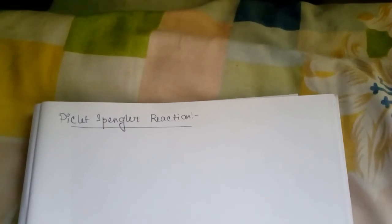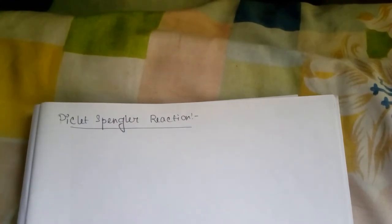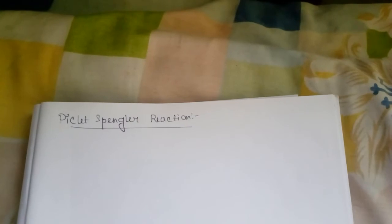This video is about isoquinoline preparation. The first method was shown in my previous video and the second method is Pictius-Spengler method. Here the starting material is also beta phenyl ethylamine. The preparation of beta phenyl ethylamine was discussed in the earlier video.